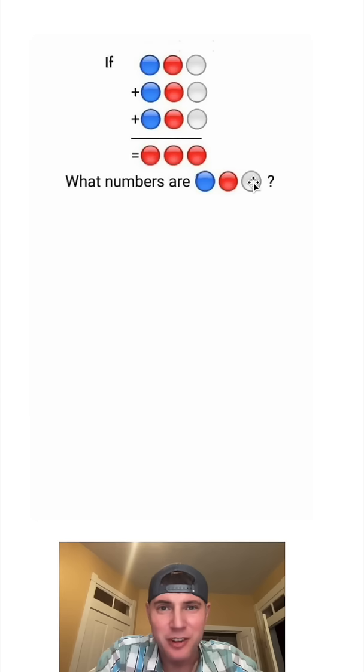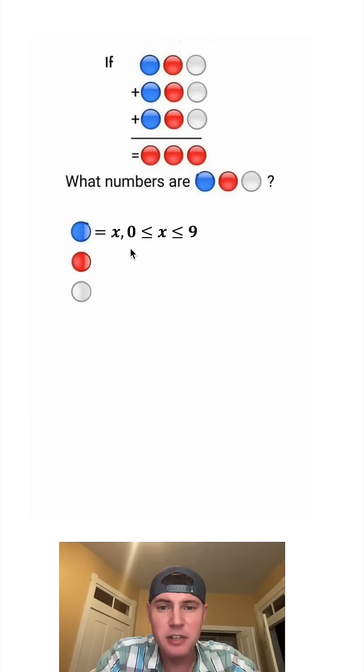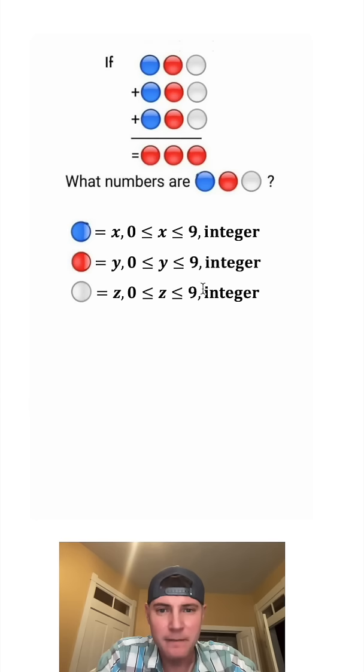So how are we going to get Wolfram Alpha to solve this for us? First, let's label the blue one x, and x is going to be defined between zero and nine because it's just a single digit, and we need it to be an integer. And same thing for red, we'll call it y, and we'll call the white one z. These are all going to be between zero and nine, and they have to be an integer.